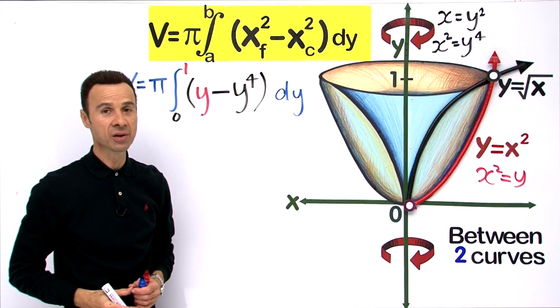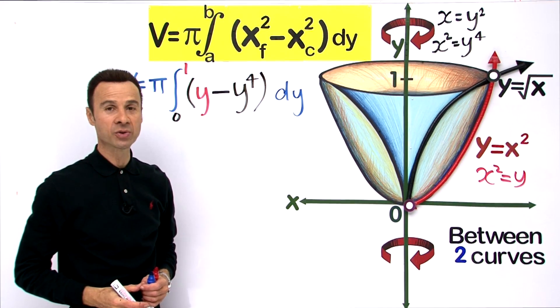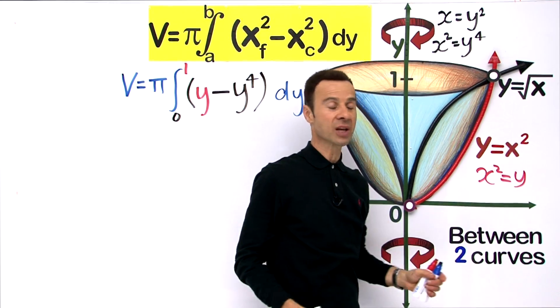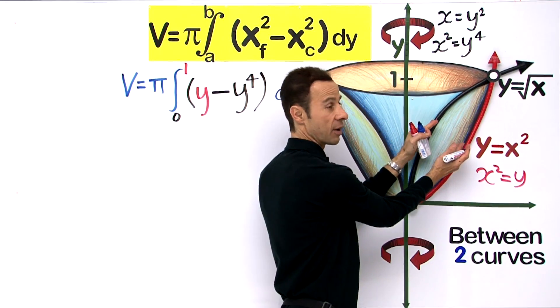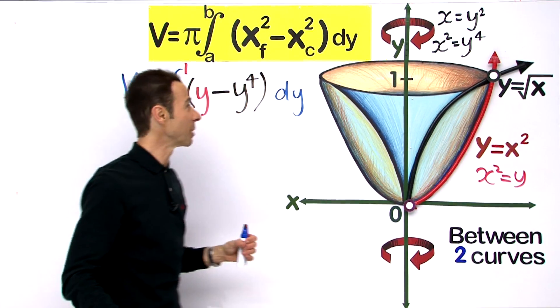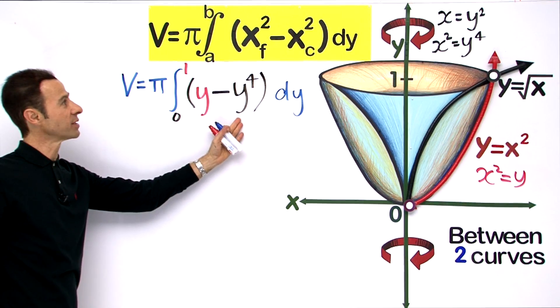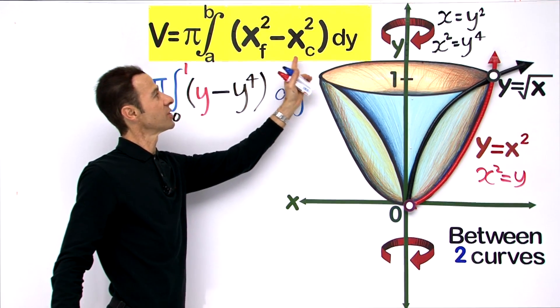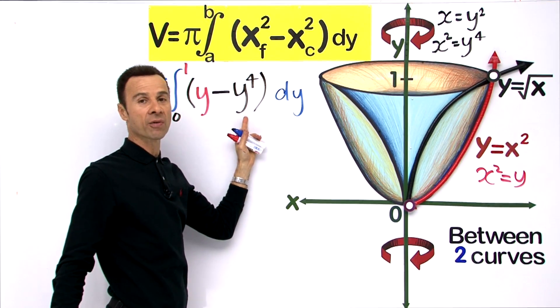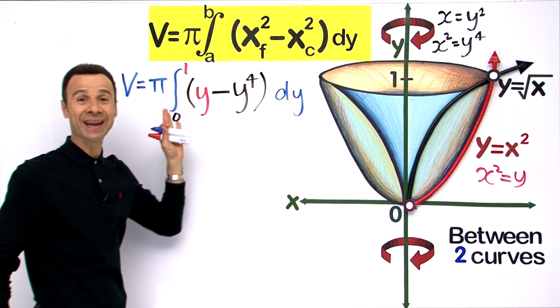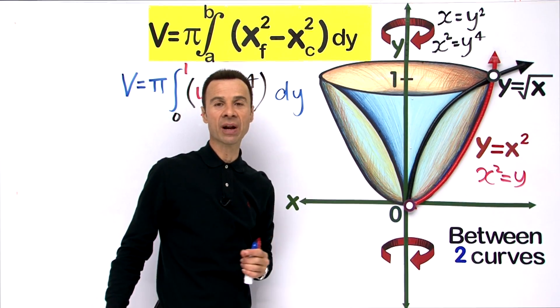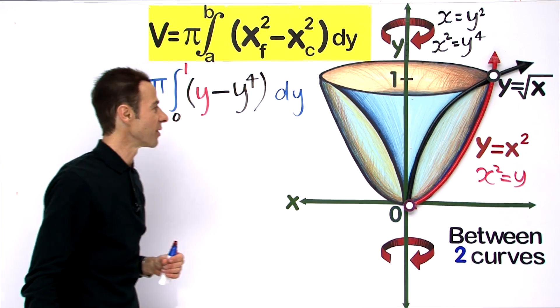Here is a 3D representation of the volume between two curves - y equals the square root of x and y equals x squared. That region has been rotating around the y-axis. We have already worked out what x squared furthest and closest are - y and y to the power of 4.